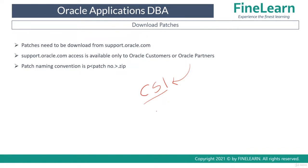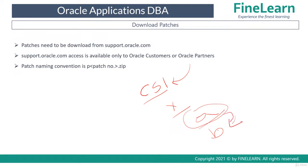In some cases, each CSI account has administrators who control access for particular users. For example, consider a company X with employees A and B. A is the administrator and manages the CSI account with access to all activities. A then creates user B, but A must explicitly grant B the permissions to download the patches. This is how patches are downloaded from support.oracle.com.